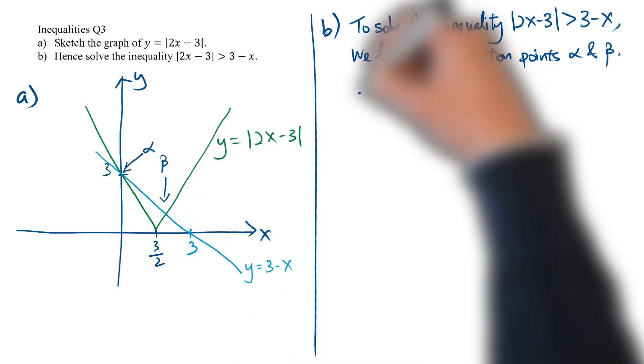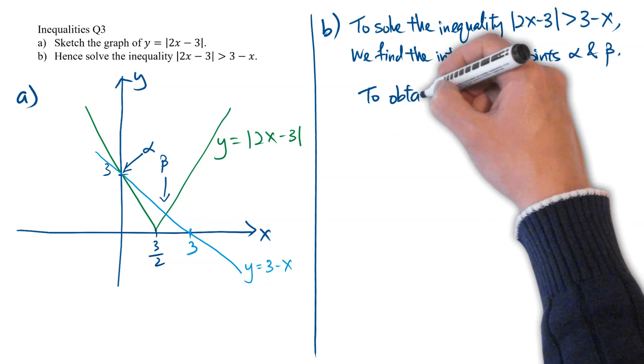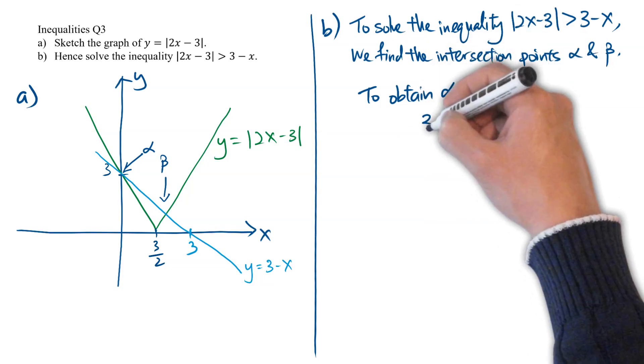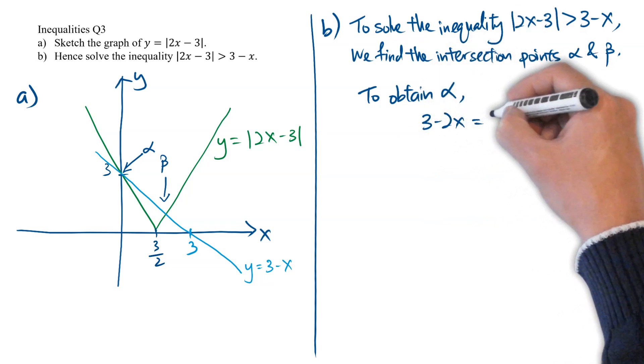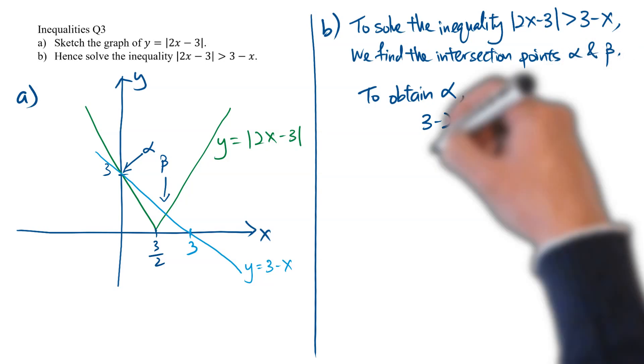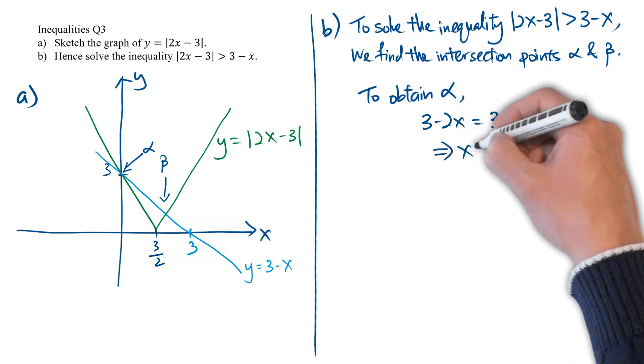To solve for alpha, we simply have to equate negative of 2x minus 3, or 3 minus 2x, to 3 minus x. This will allow us to solve for x equals 0.